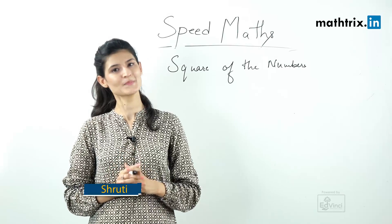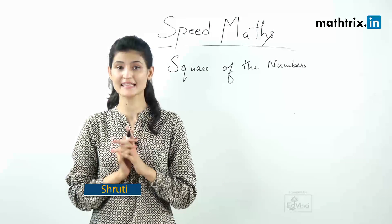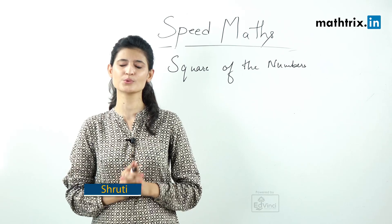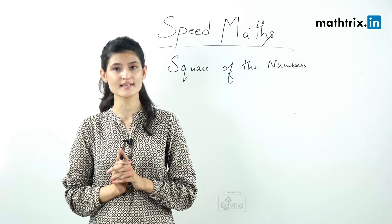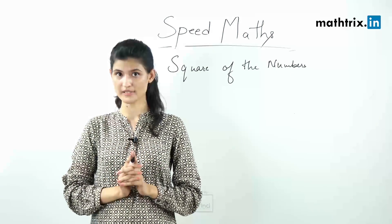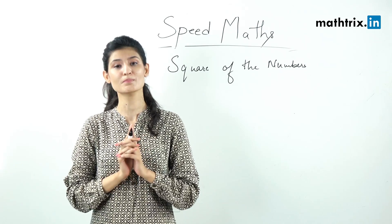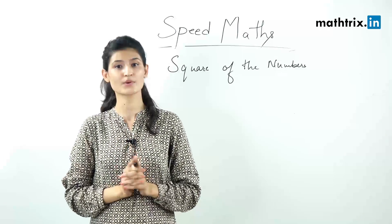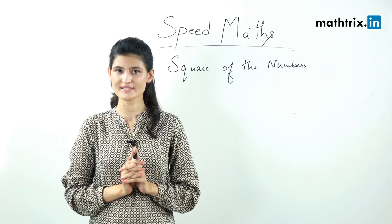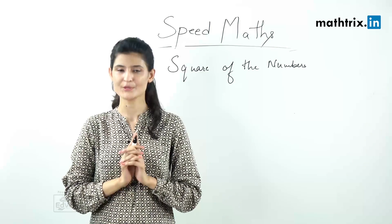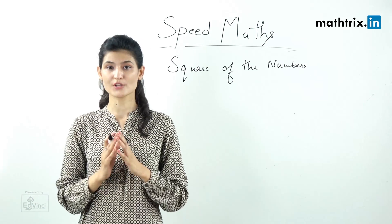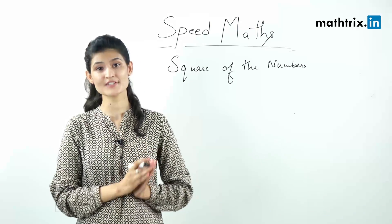Hello everyone and welcome to speed math classes. In this episode I'm going to teach you how to find squares of numbers. But before that, I would like to tell you that you must learn squares from 1 to 25 because that's going to help you master the rest of the series. Now I'm going to tell you how to find squares from number 26 to 75.